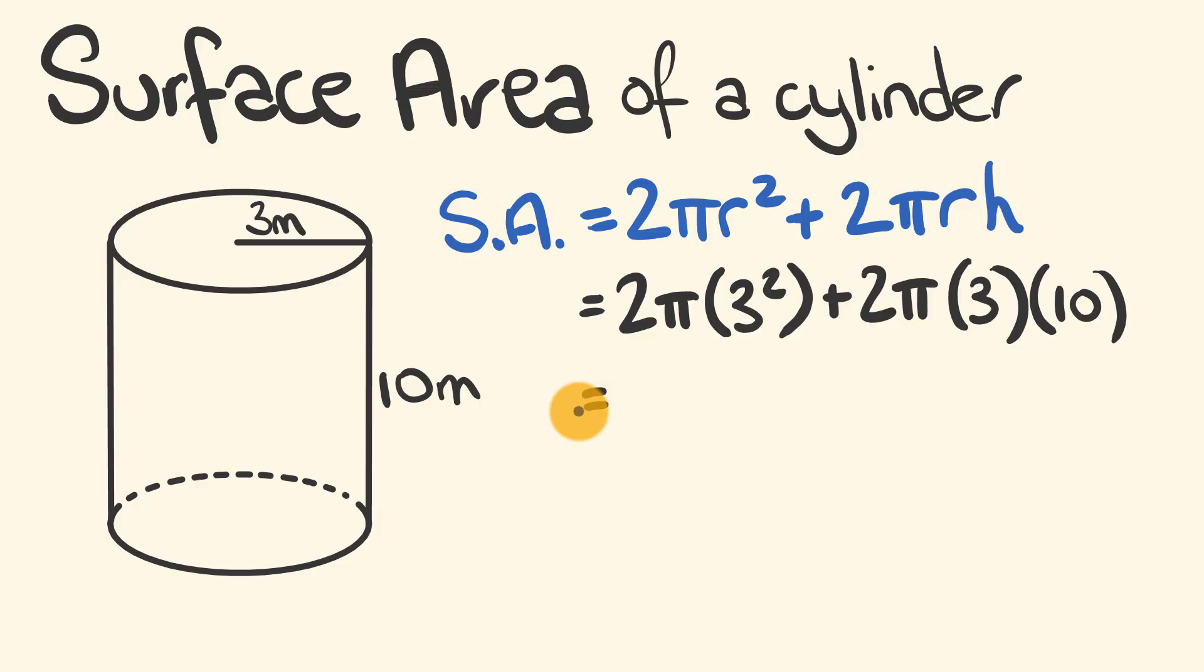Alright, let's just go through and solve this now. 2 times pi, that can stay the same. We have 3 squared, which is equal to 9. And this is being added to 2 pi, and we have 3 times 10, which is equal to 30.